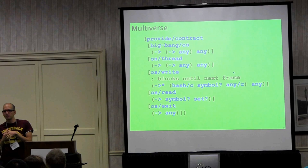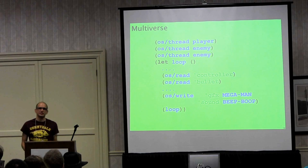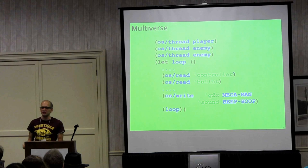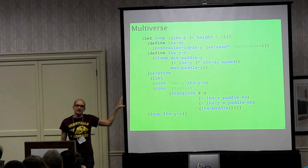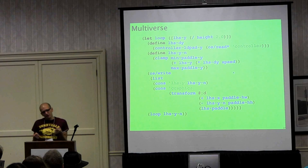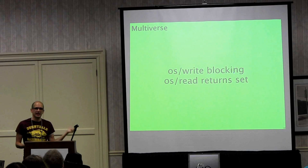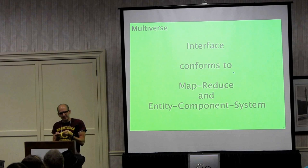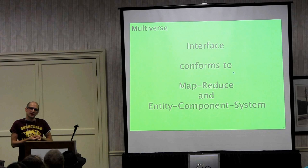When we read, we read sets, so we can't observe the ordering. Here's example code starting three threads for the player, the enemy, and another enemy — there's a loop for the player that reads the controller state, checks where a bullet is on screen, writes graphics and sound. This is the entire source code for the paddle in a Pong game. This model is incredibly flexible and corresponds to the MapReduce architecture — every process is independent, and effects combine by a reduction process — and it also corresponds to the entity component system model popular in games today.